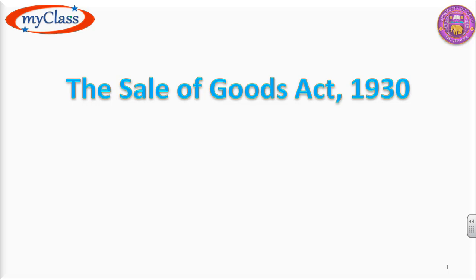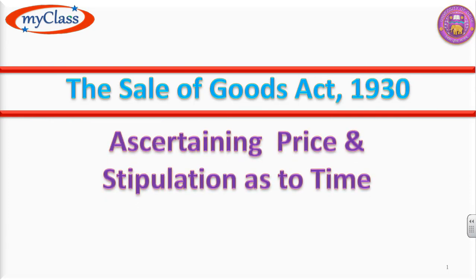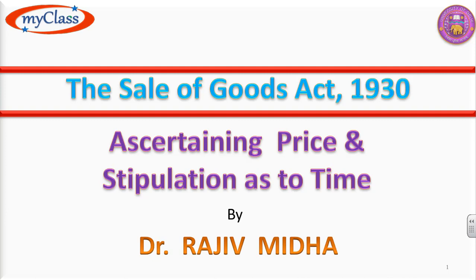In this video lecture we will talk about the Sale of Goods Act 90.30 — specifically ascertaining price and stipulation as to time. Ascertaining price means how price is determined, and stipulation as to time refers to conditions related to time in a sale contract. We will discuss both of these topics in this video lecture.